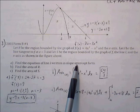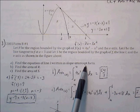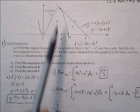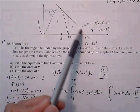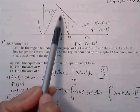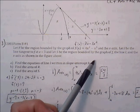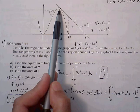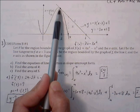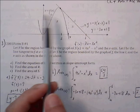Part A says find the equation of line L written in slope-intercept form. To find this tangent line equation, we need to find an ordered pair and the slope at that point. Once we have a point and a slope, we can put it into point-slope form, and then convert to slope-intercept form.